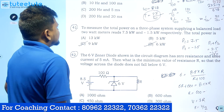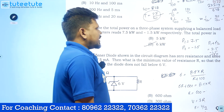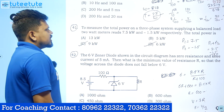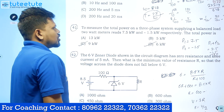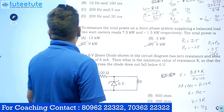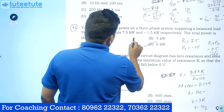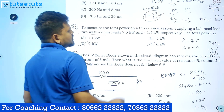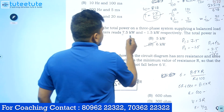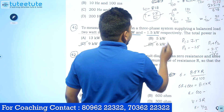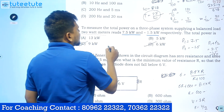See the first question. To measure the total power on a three-phase system supplying a balanced load, two watt meters read 7.5 kilowatt and minus 1.5 kilowatt respectively. The total power is? They have used the two watt meter method, and the readings are 7.5 kilowatt and minus 1.5 kilowatt.